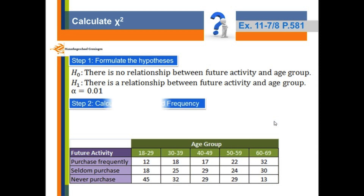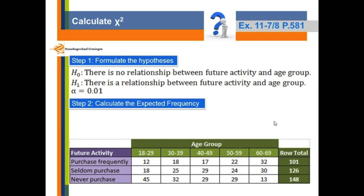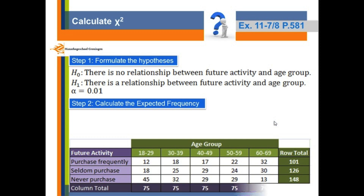The second step is to calculate the expected frequency. We first need to calculate the row total. For the first row we have 101 persons, for the second row we have 126, while for the third row we have 148. And then we calculate the column total. For each column, we have the same number in this case: 75.